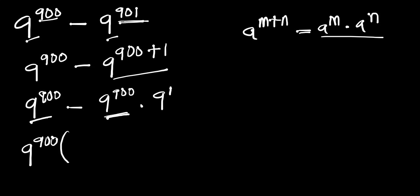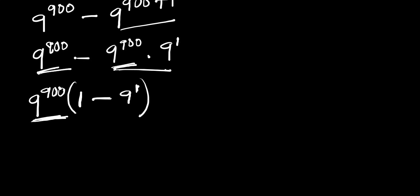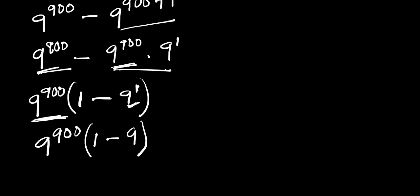Dividing 9 to the power of 900 by 9 to the power of 900 gives 1, and 9 to the power of 1 is simply 9. So inside the bracket we have 1 minus 9. This gives us 9 to the power of 900 times (1 minus 9), which is simply negative 8.